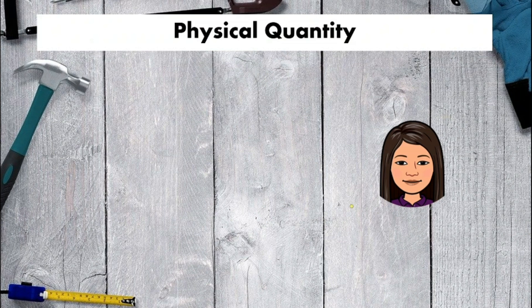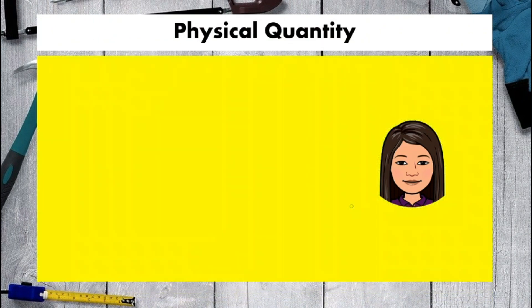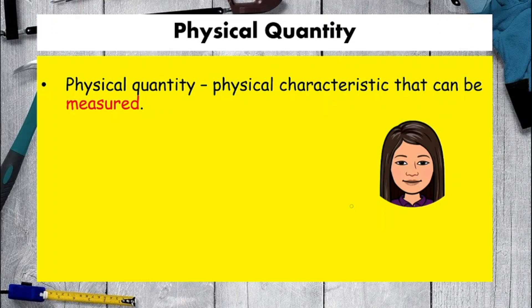So first of all, what is physical quantity? Physical quantity is physical characteristic that can be measured. It means we can represent this characteristic by using numbers.